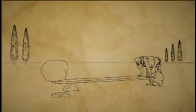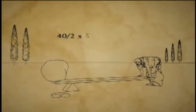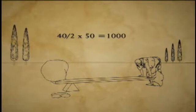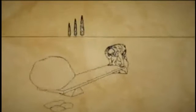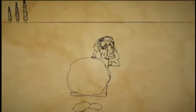Because the ratio of the lever's length from the fulcrum, forty over two times fifty pounds, equals a thousand pounds. Add five pounds, and Archimedes could put his boulder just where he wanted it.